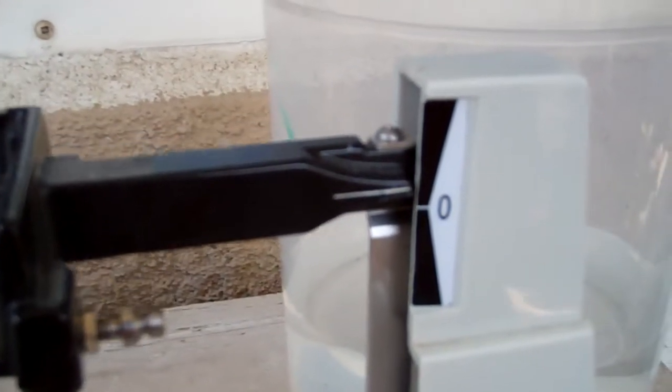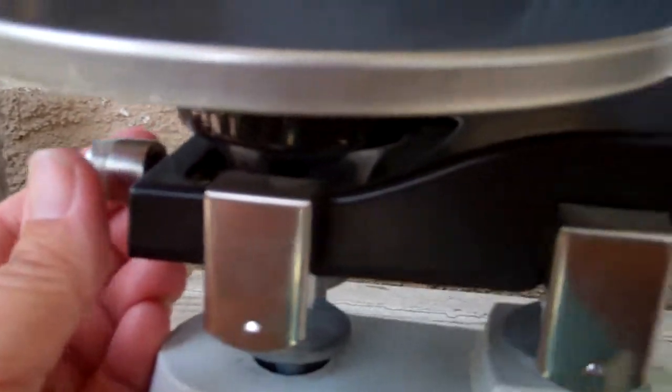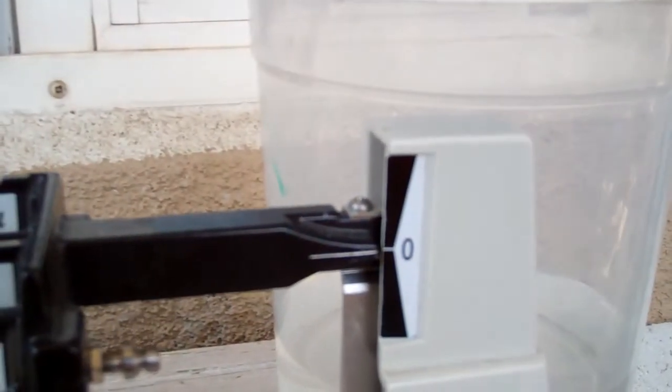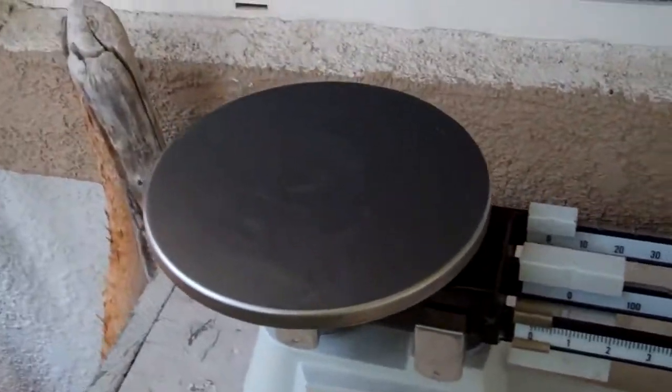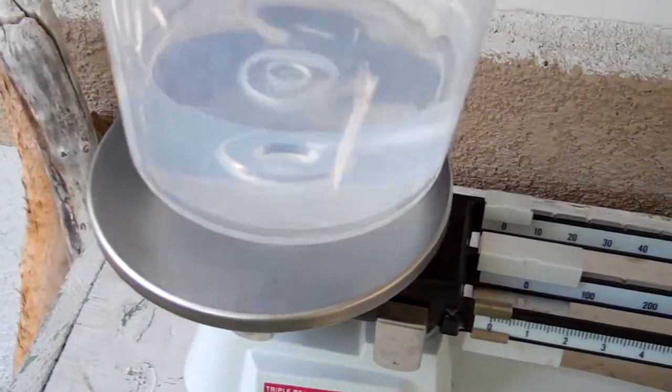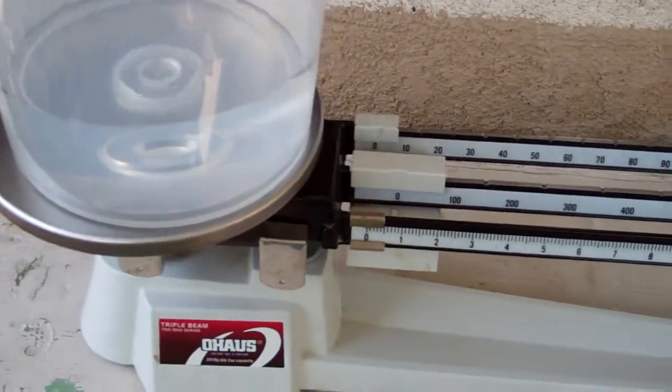So once you have that done, by turning the knob, and that's zeroed, then you're ready to go. Put your object that you want to get the mass of on the pan.